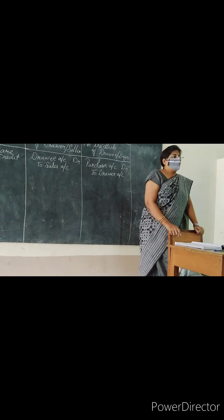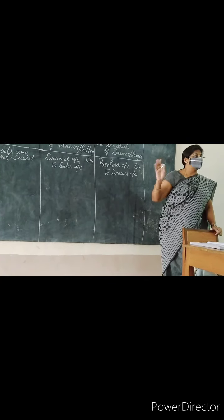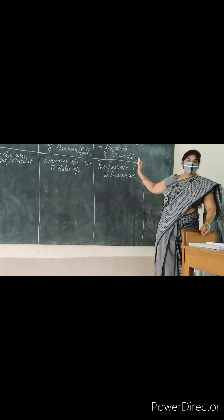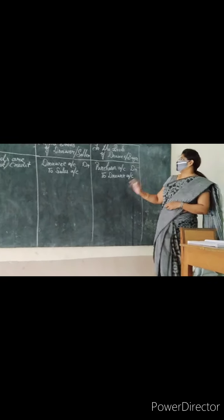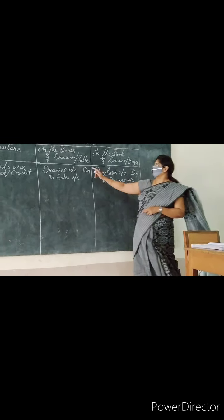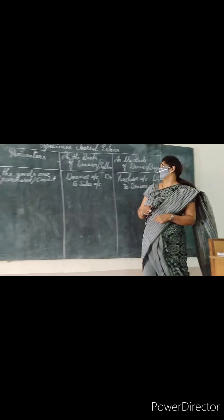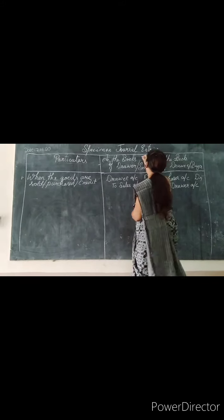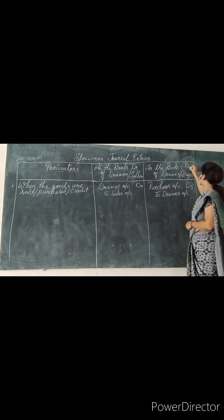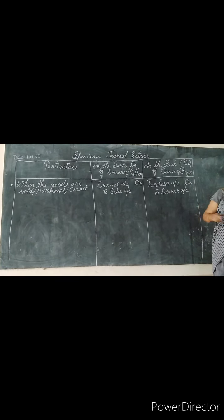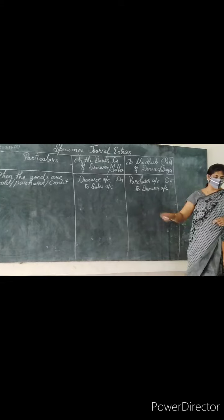Debtor is the drawee — the buyer. Creditor is the drawer — the seller. The one who is giving and the one who is taking. Drawer is the creditor and drawee is the debtor.